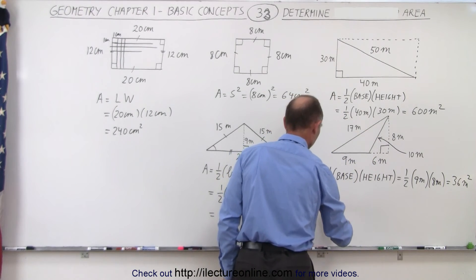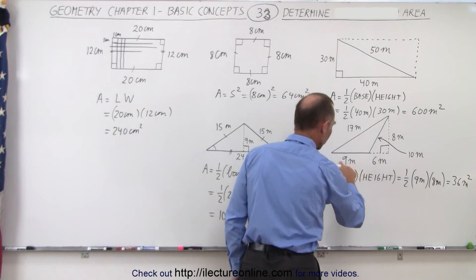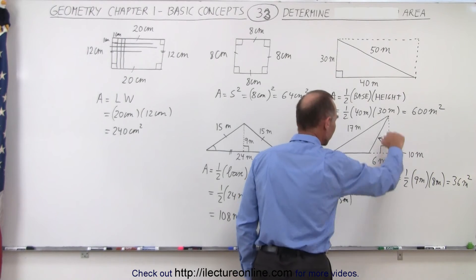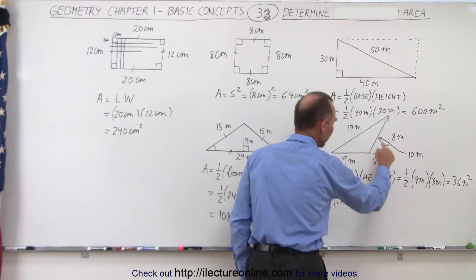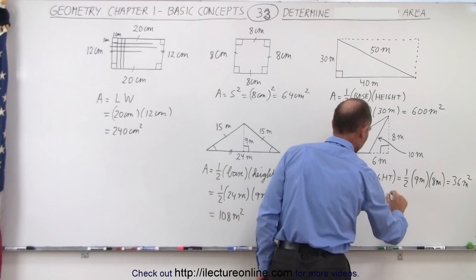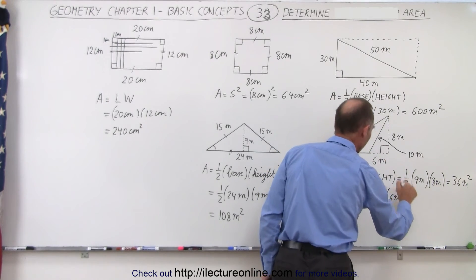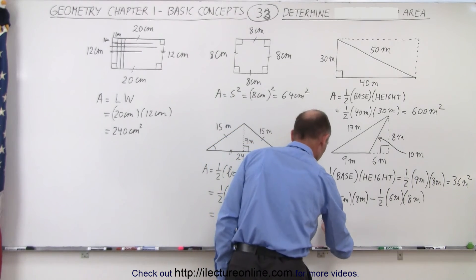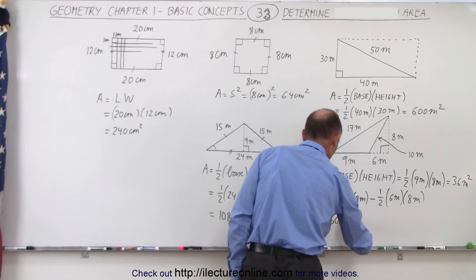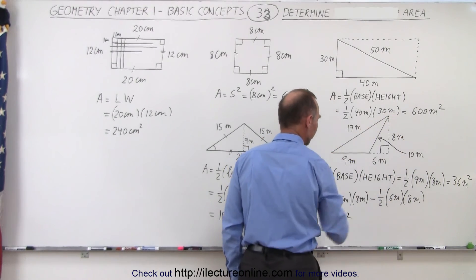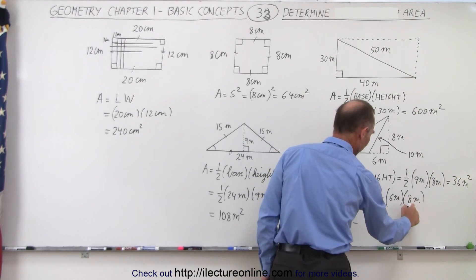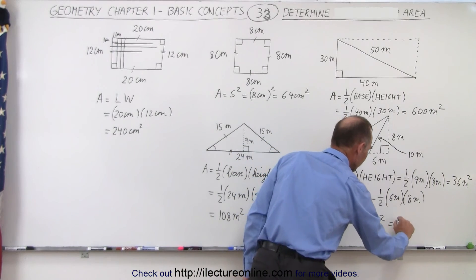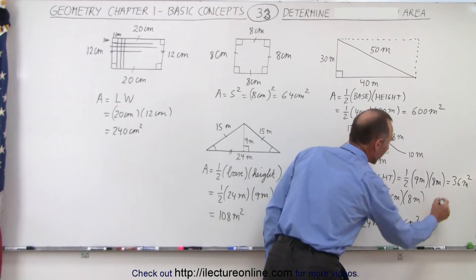So what we could do is find the area of this entire triangle, then subtract the area of this smaller triangle, and we should get the remainder. The whole base would then be 15 meters, so it would be one-half times 15 meters times the height of eight meters. And now we subtract this missing piece: one-half times the base of six meters times the height of eight meters. Half of eight is four; four times 15 is 60 meters squared for the entire triangle. Then we subtract one-half times six times eight: one-half times eight is four, and four times six is 24 meters squared. So 60 meters squared minus 24 meters squared is indeed 36 meters squared — the same result.